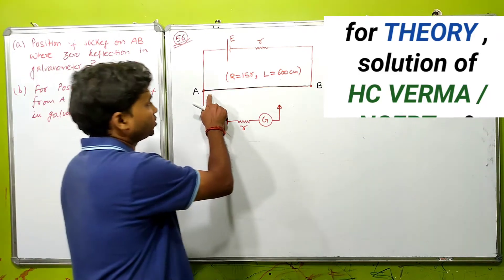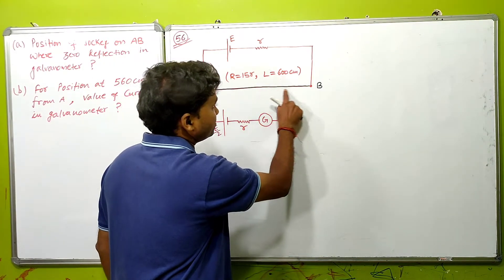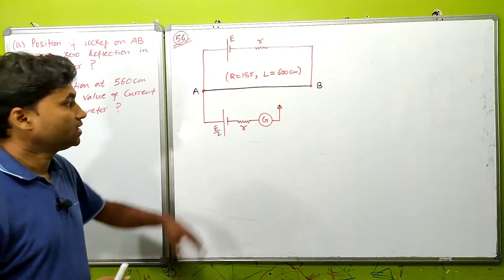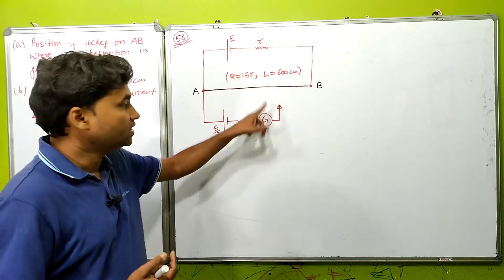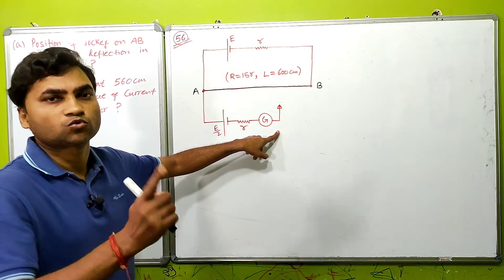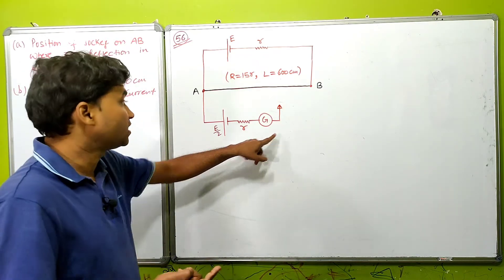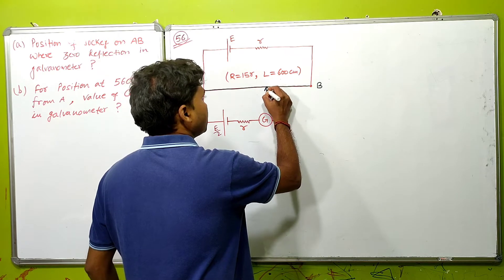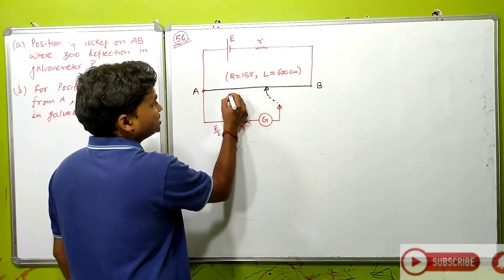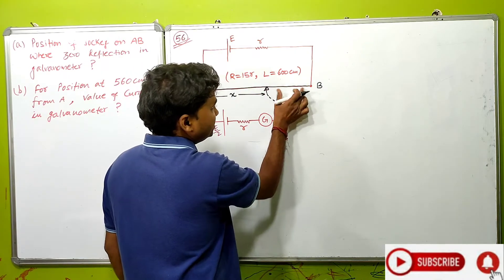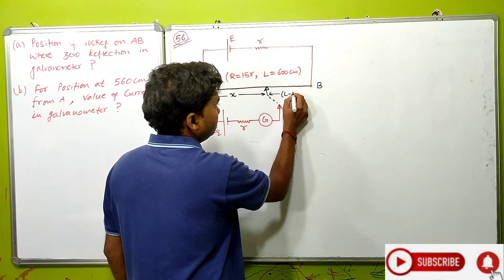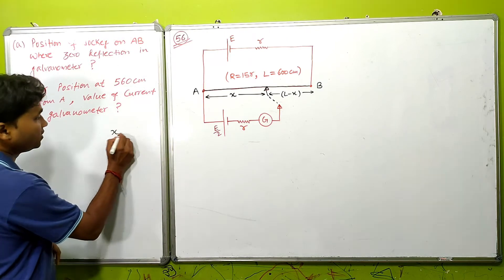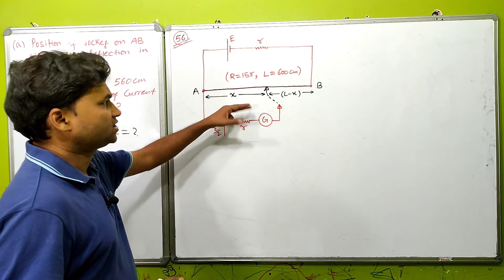For Part A of the question, we are looking at the potentiometer wire. We need to find the position on the wire where the jockey should touch such that the galvanometer shows zero deflection — meaning no current flows through the galvanometer path. Let's assume the jockey touches at distance x from point A, so the remaining length is L minus x, where the total length is L.